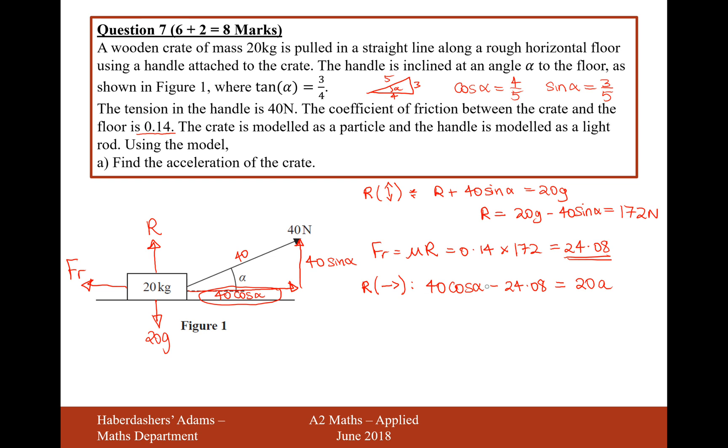Let's now calculate this left hand side. It's going to be 40 times 4 fifths. And then minus the 24.08. And that's going to give us 7.92 equals 20a.